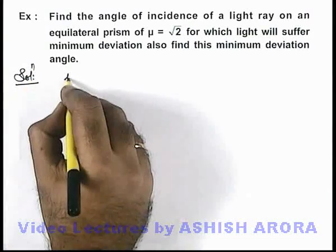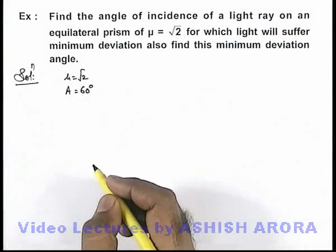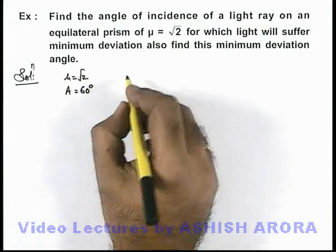Here we are given mu is equal to root 2 and prism angle to be 60 degrees as this is an equilateral prism.